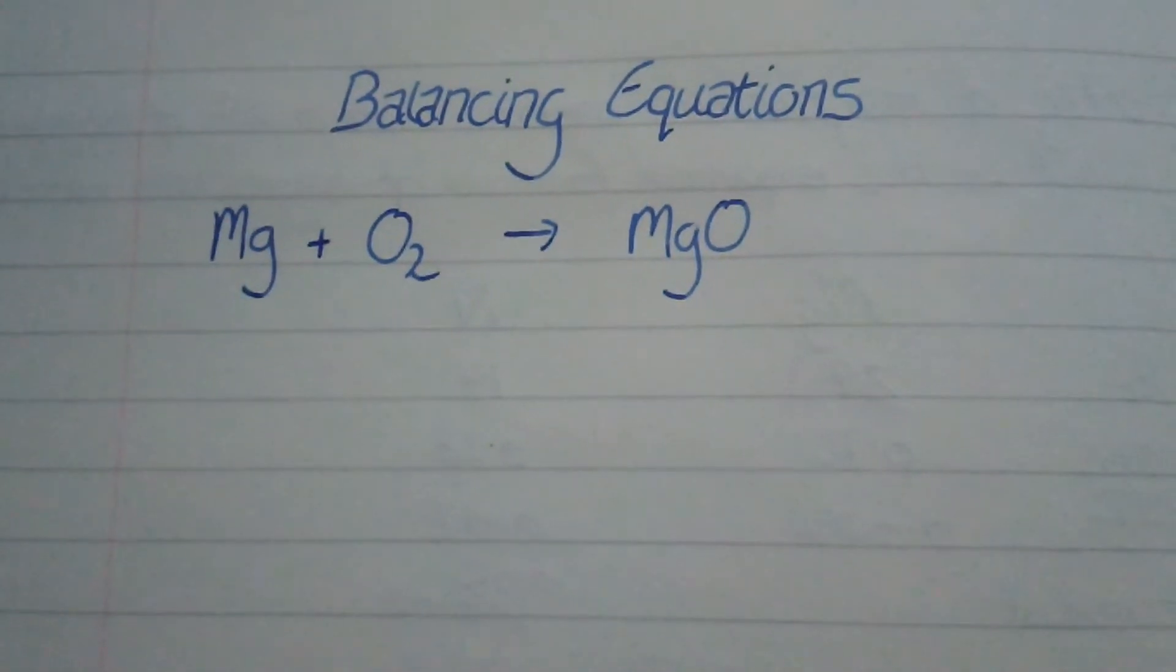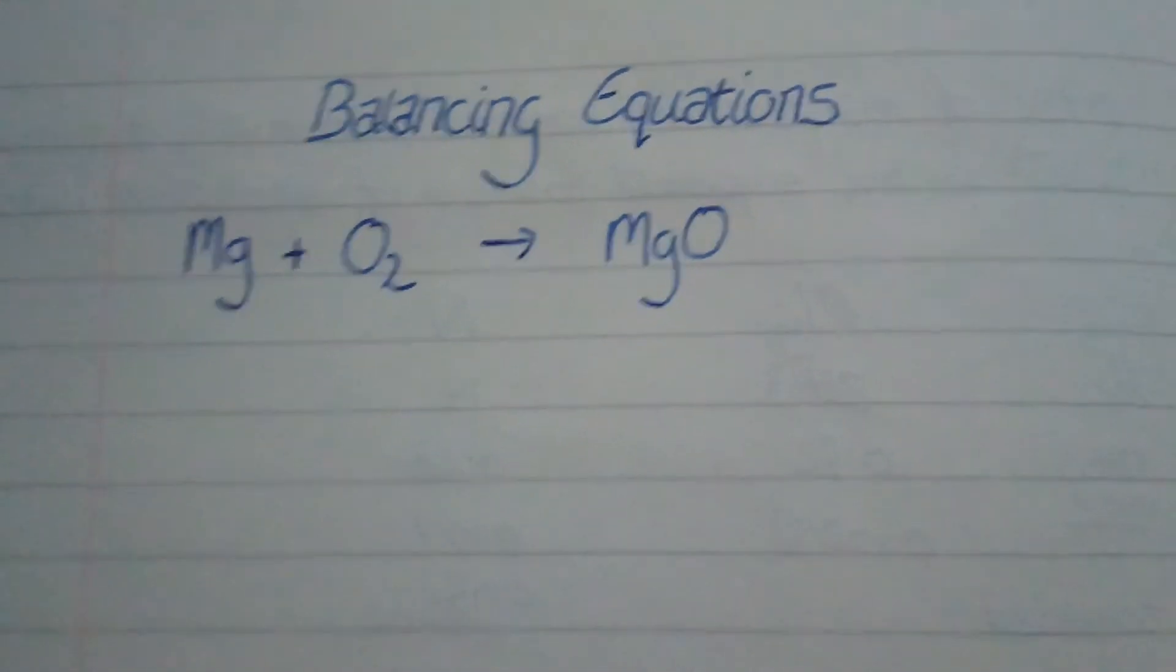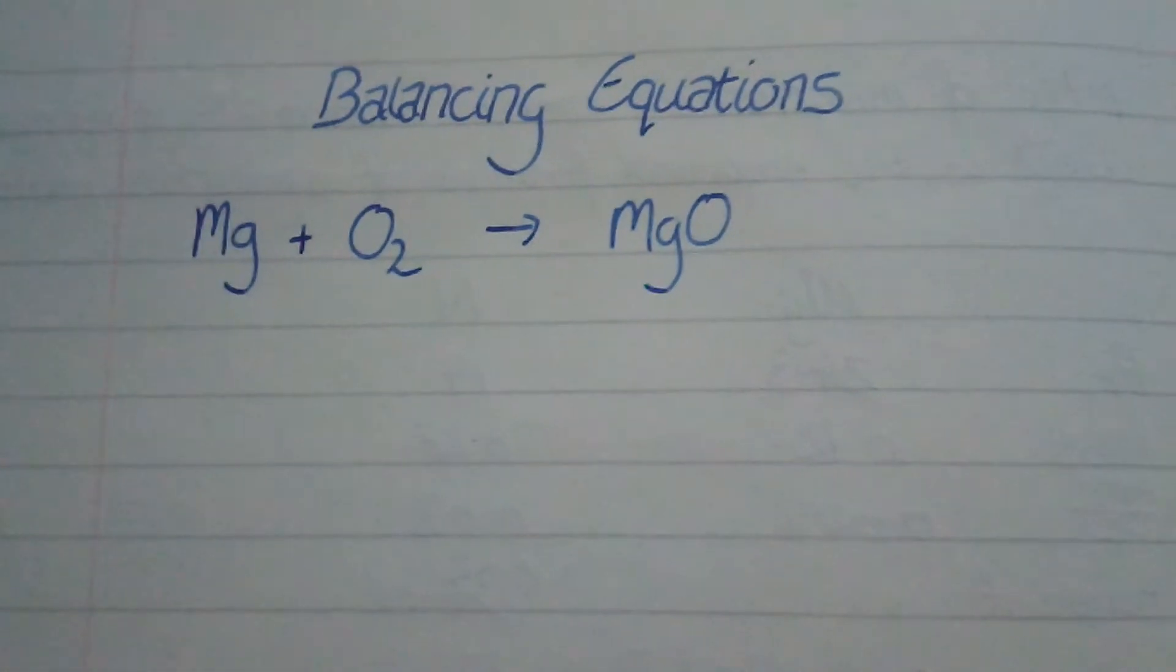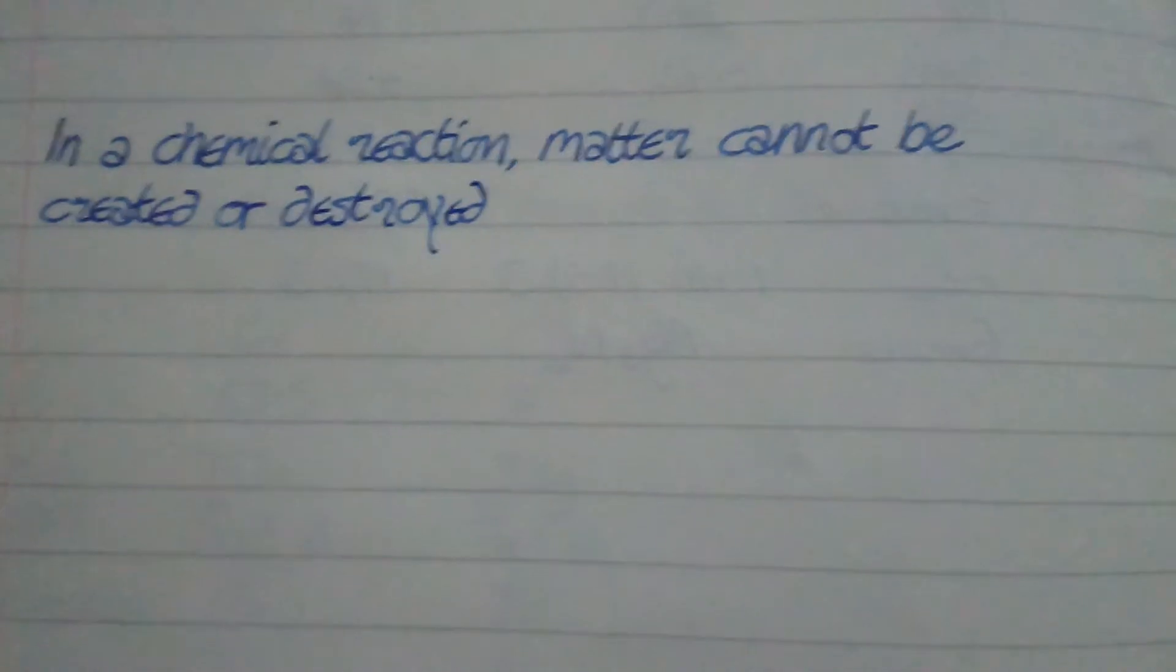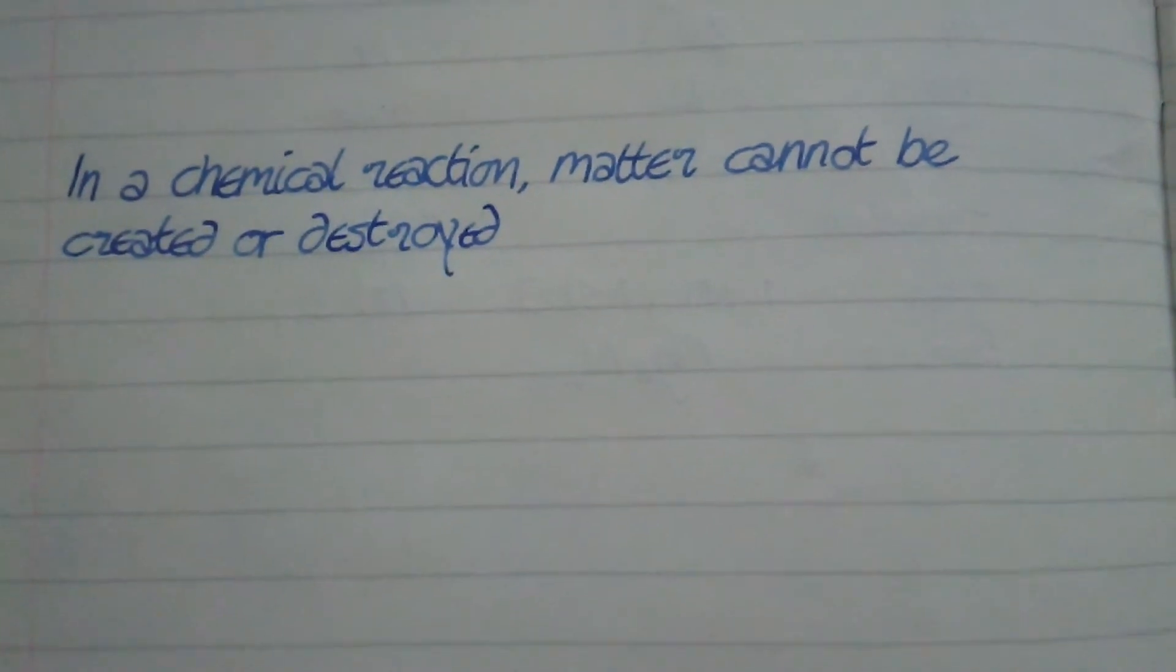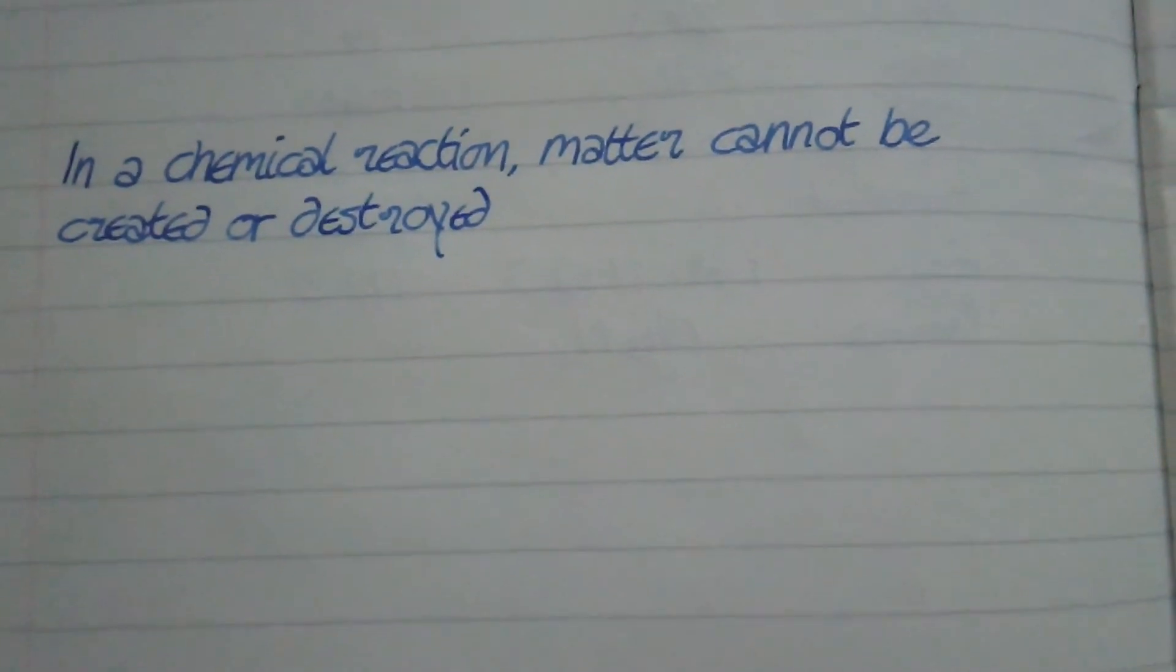But what we need to do is make sure we have the same number of atoms on each side. The law of conservation of mass states that in a chemical reaction, matter cannot be created or destroyed.